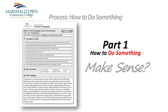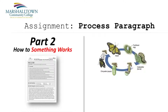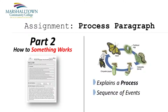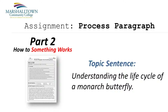So that's the basic structure of a process analysis, and in particular, the type of process that explains to a reader how to do something. In the second part of this assignment, I want you to write a process paragraph that explains to a reader how something works. As I mentioned earlier, this is a little different from how to do something, because you're not giving instructions to your reader — you're simply explaining what happens as something goes through a process. For example, you might explain to your reader what happens during the metamorphosis of a butterfly. Notice how the words life cycle reveal that the paragraph is likely going to explain a sequence of events.